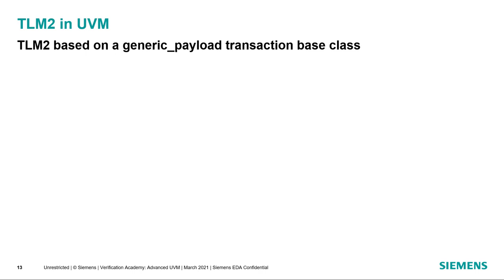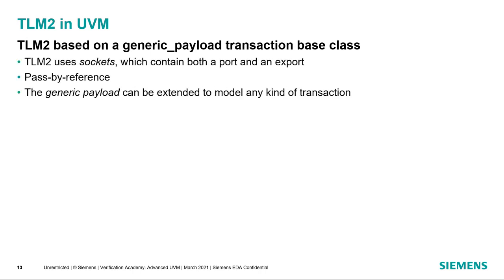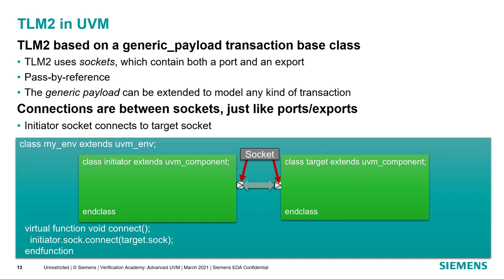In UVM, we've also added support for TLM2. TLM2 is a SystemC standard, and we've implemented the key parts in SystemVerilog and included them in UVM. TLM2 focuses on bus-based communication and simplifies bidirectional and pipeline communication through the use of sockets, which are basically a combination of a port and an export with a single connection. Unlike TLM1 which uses pass-by-value semantics, TLM2 uses pass-by-reference, so it's more efficient. Just like TLM1, we connect the initiator socket to the target socket, which preserves the flexibility to swap component types via the factory.